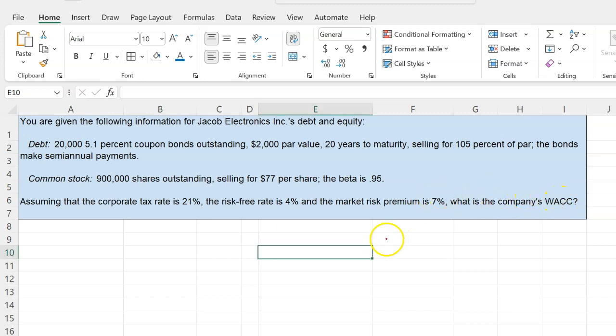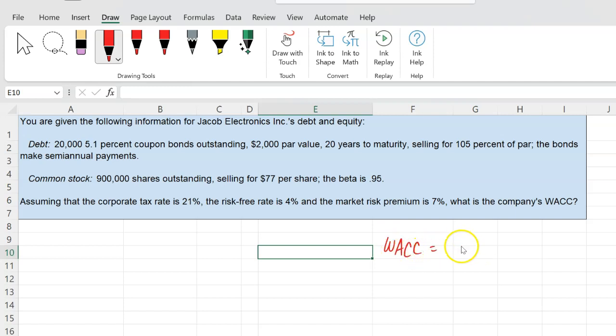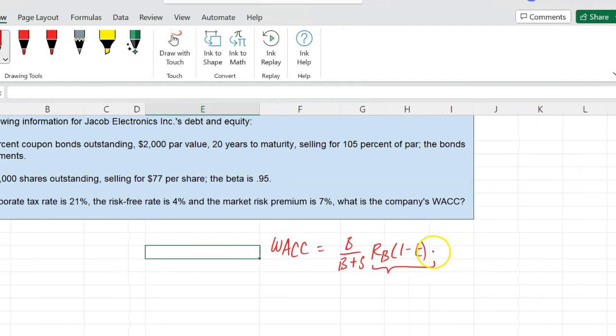Now recall that weighted average cost of capital is calculated as B over B plus S, which is the debt ratio that the firm has or debt in relation to the total of debt and equity into the cost of debt into 1 minus the tax rate. We multiply cost of debt with 1 minus the tax rate because debt is tax deductible. So what we're really interested in is the after-tax cost of debt and then plus S over B plus S into the cost of equity. This is the formula for weighted average cost of capital. So what we really need are three or four things.